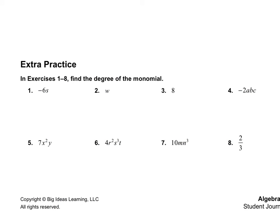For the first example problems, we need to find the degree of the monomial. In number one, I can see there's an invisible one with the variable S, so the degree is one. For number five, there is an invisible one, so I have a two and a one — adding those together gives three. For number three, I don't have any variables at all, which means I'd need a variable with an exponent of zero, so the degree is zero.